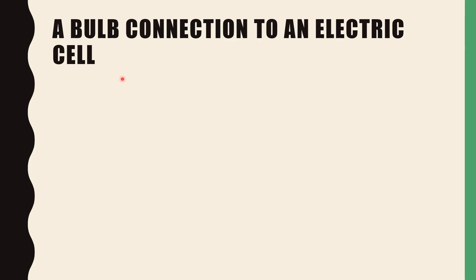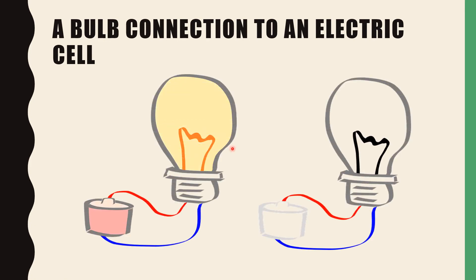A bulb connection to an electric cell — how the connection is made. In this image, you can see that when wires are connected to an electric cell, the bulb is glowing. But when there is no electric cell, the bulb is not glowing. One wire is connected to the metal cap of the electric cell and the other wire to the metallic base. Then only the bulb glows. Always the connection should be proper. You can try this at your home also.